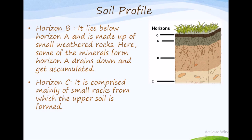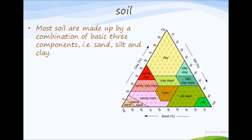The last one is horizon C, which is comprised mainly of small rocks from which the upper soil is formed. Most soils are made up of a combination of three basic components: sand, silt and clay. How the soil looks and feels depends upon the amount of sand, silt and clay contained in a particular soil type.